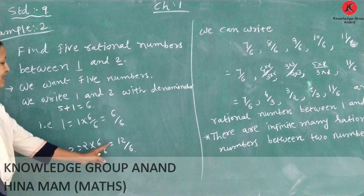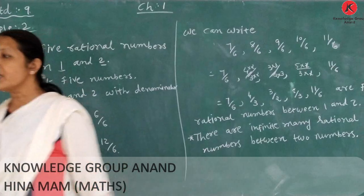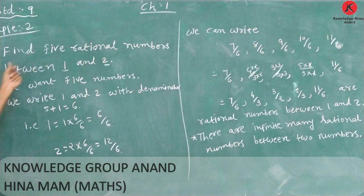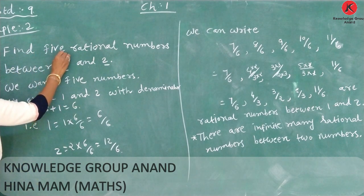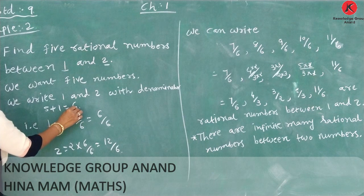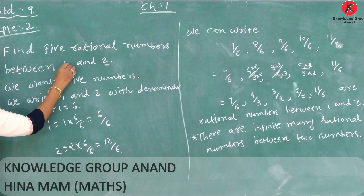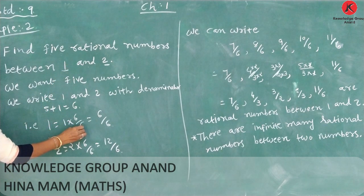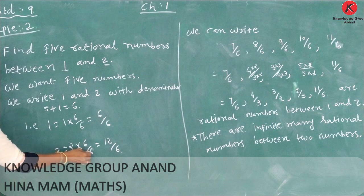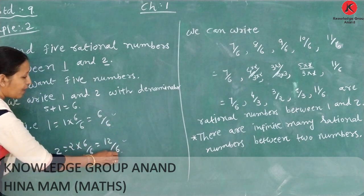And 2 is equal to 2 multiplied by 6 over 6, which equals 12 over 6. So we are looking for rational numbers between 6 over 6 and 12 over 6. Which numbers lie between 6 and 12? The numbers between 6 over 6 and 12 over 6 are what we need.